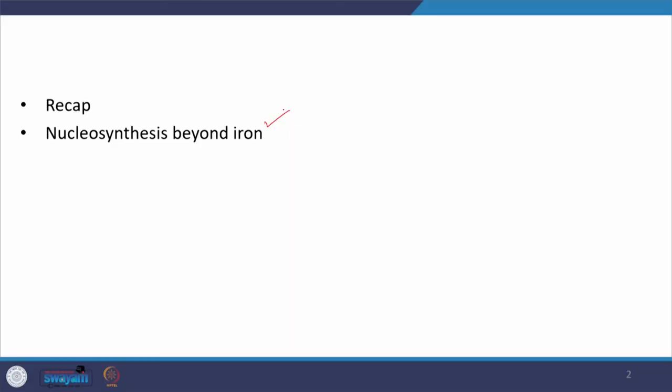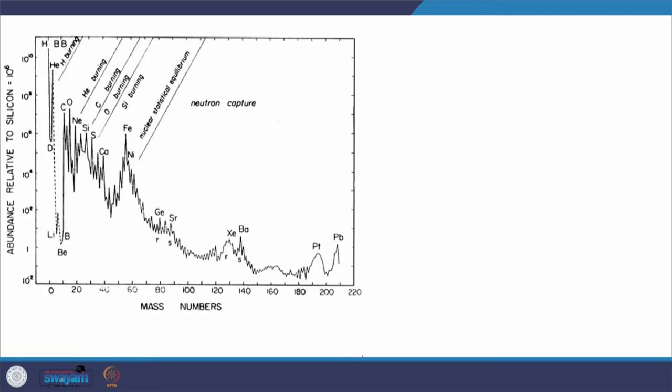Nucleosynthesis beyond iron — we are going to see what are the salient features, and as part of the quest for the origin of trans-iron elements, let us examine the most important curve diagram in this course: the abundance curve.